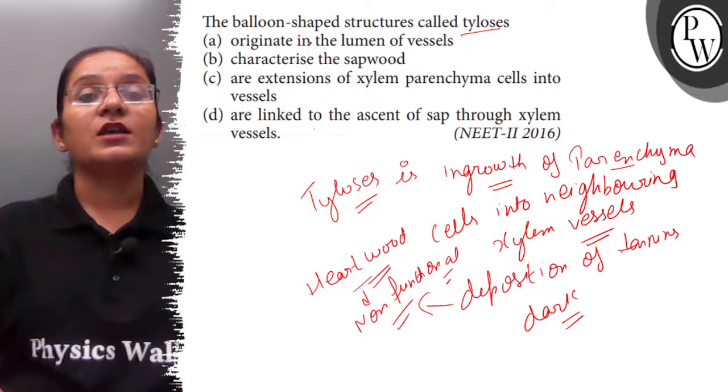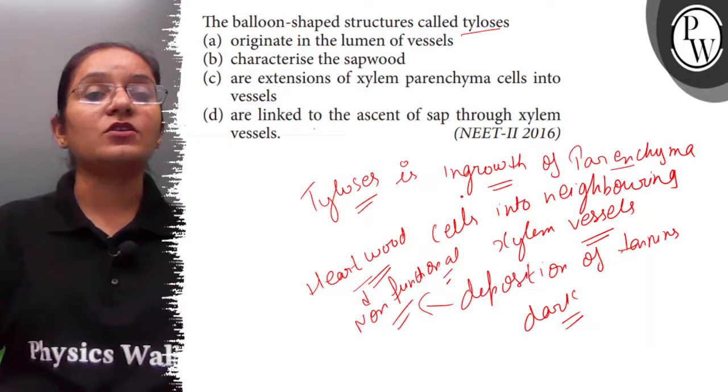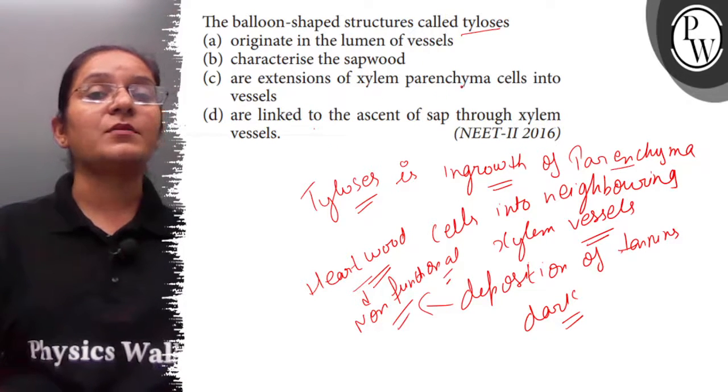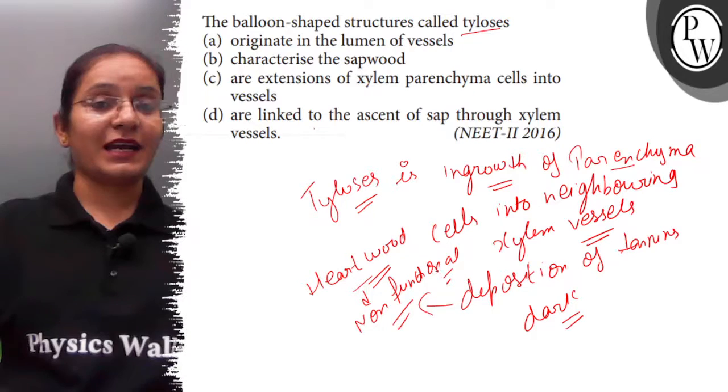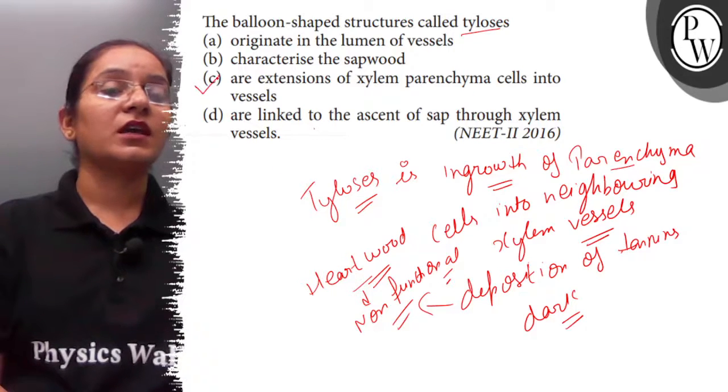So balloon-shaped structures called tyloses are extensions of xylem parenchyma cells into the vessels, and the correct answer here is option C. Thank you.